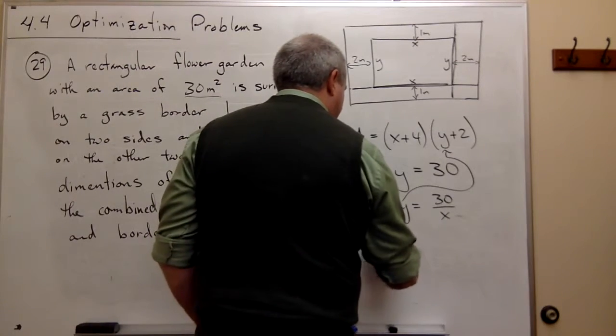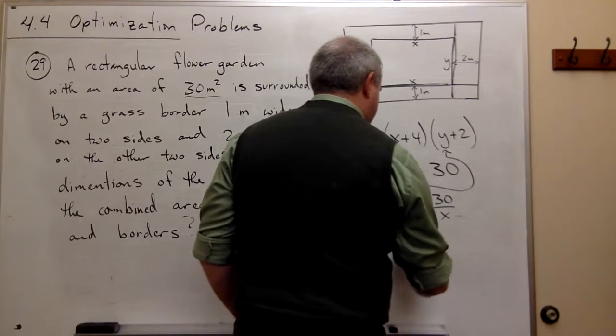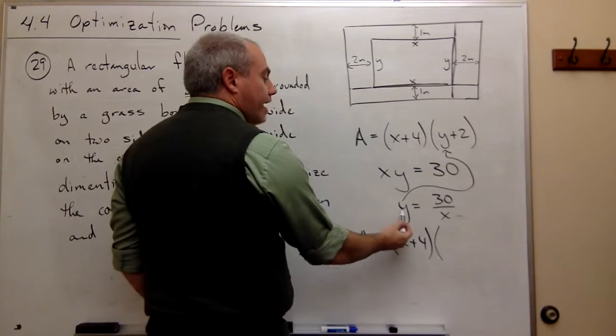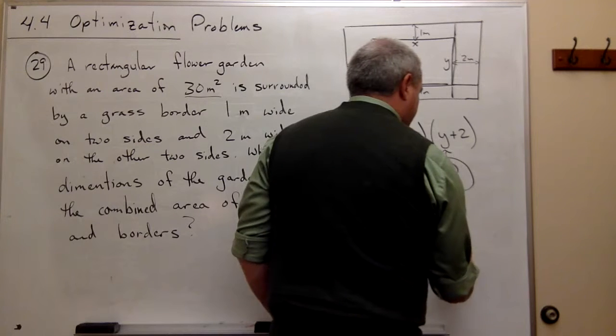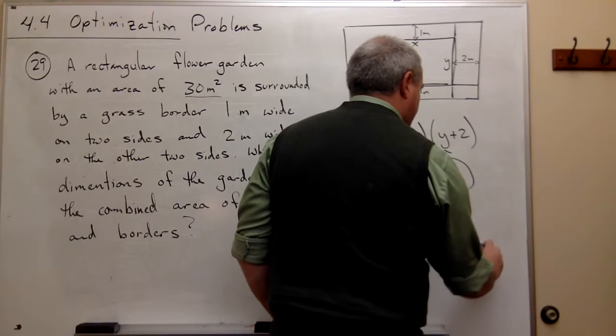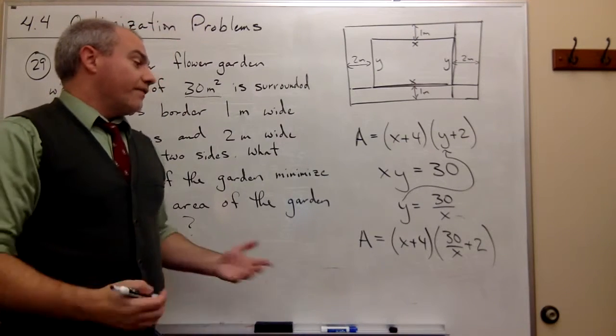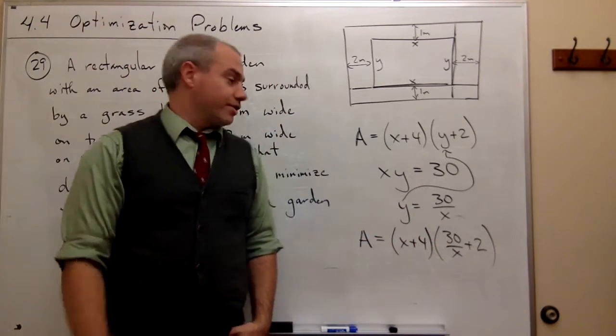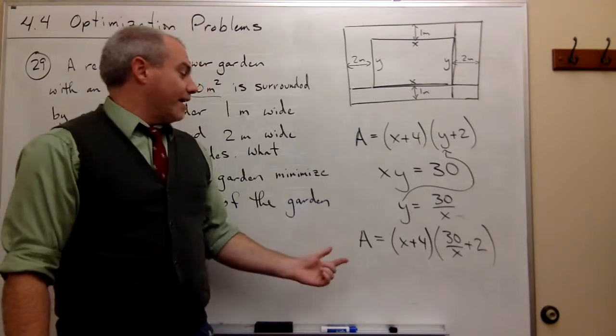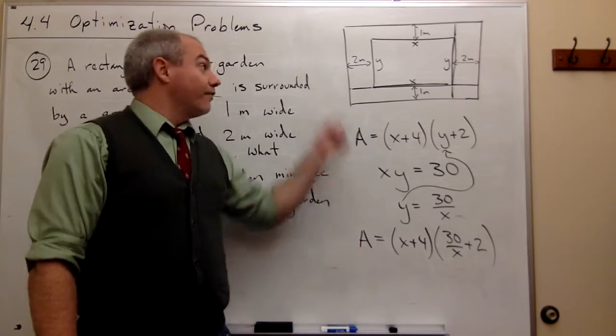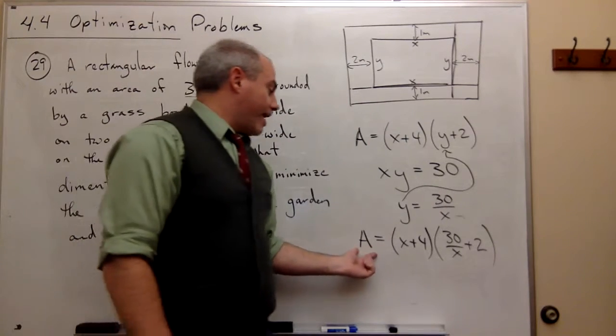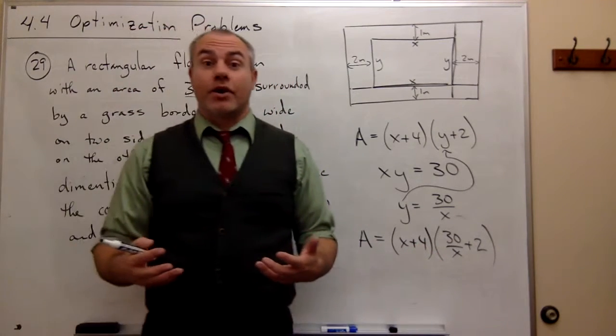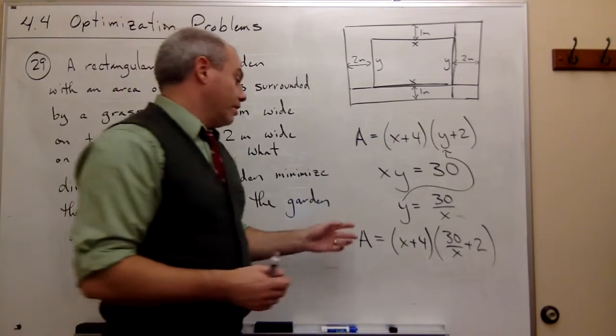If I do, I get that the area is equal to (x + 4) times—well, y plus 2, but y now I know is 30 over x. So this is (30/x) + 2. And if I wanted to make my life a little bit easier, maybe I would multiply this out before I do any sort of calculus to it. But I got ultimately what I wanted, and that is what is the thing I'm trying to make big or small—the area of the outer rectangle—and I have that area in an equation that just involves one variable x. So now I'm ready to use all the calculus that I know to find the optimal length for x.